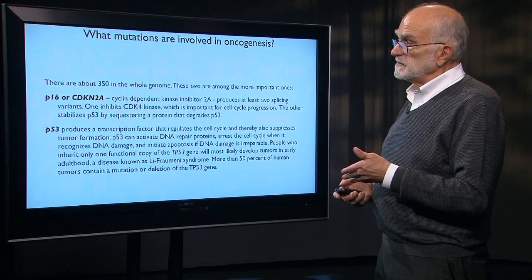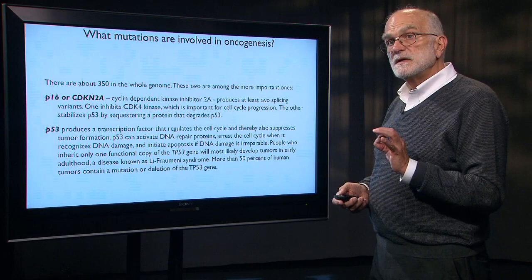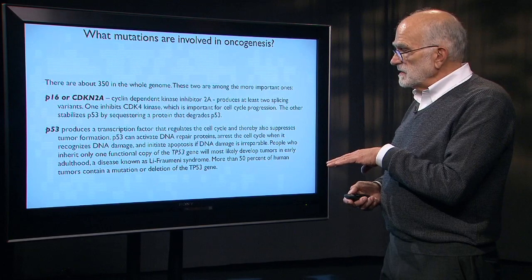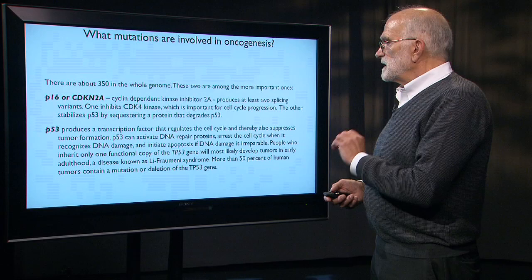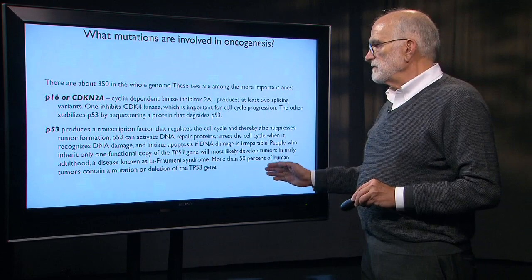The other is P53 — a gene that produces a transcription factor regulating the cell cycle and suppressing tumor formation. It can activate DNA repair proteins, stop the cell cycle when it recognizes damage, and initiate apoptosis if DNA damage is irreparable. More than half of human tumors contain a mutation in this gene.